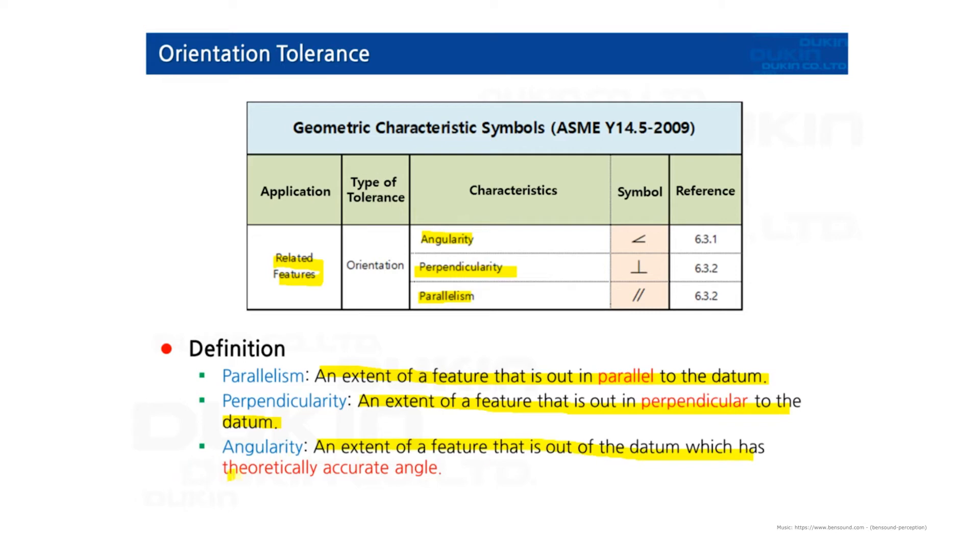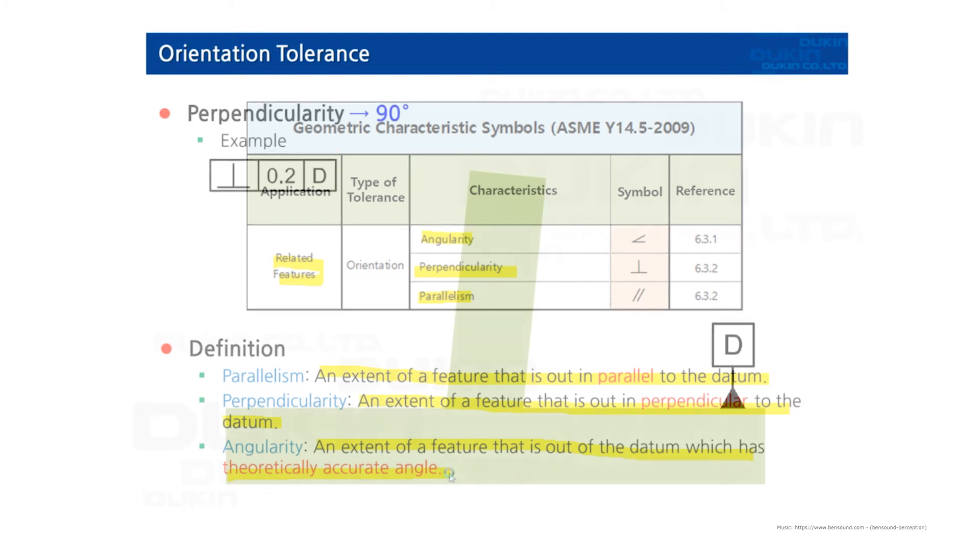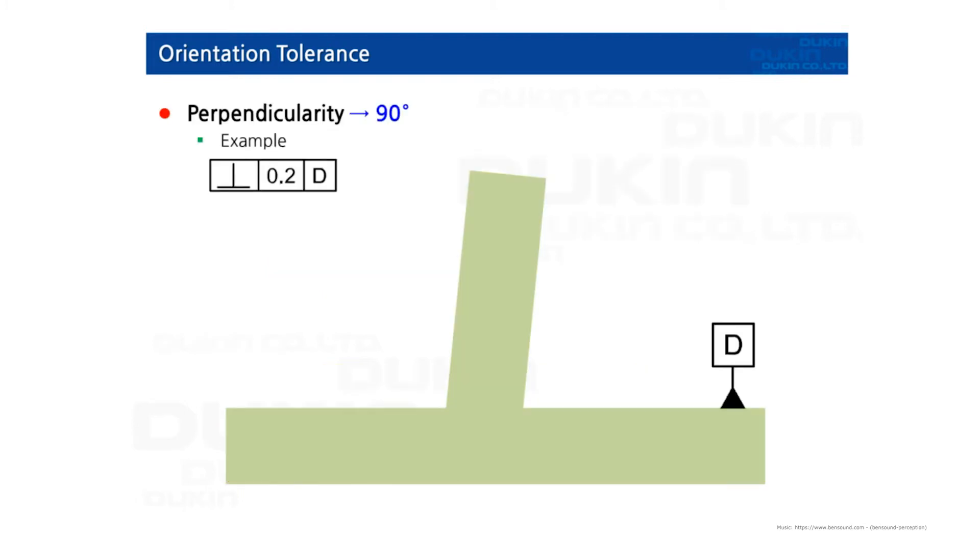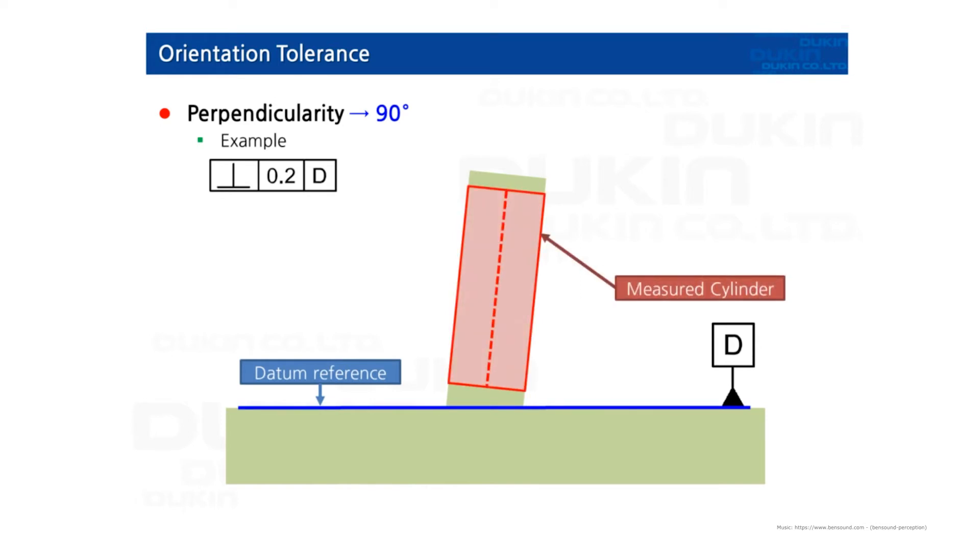Let's look at some examples. First, perpendicularity controlled by 0.2 according to datum D. Datum D plane is here and we measure a cylinder like this. You can see the axis in the center of the cylinder. The surface shall be within two parallel planes.